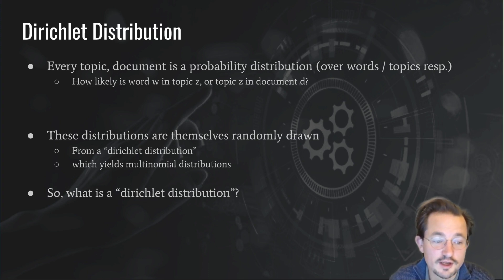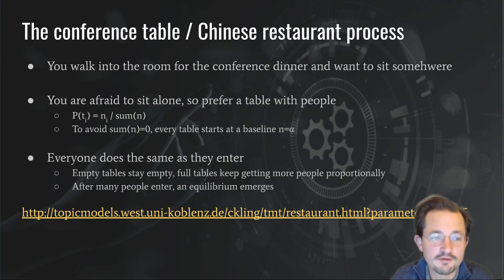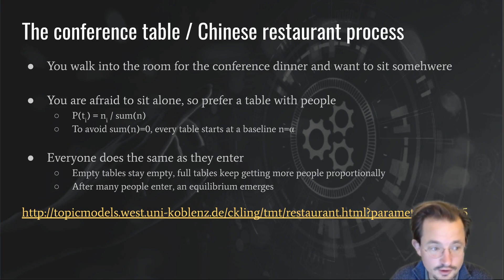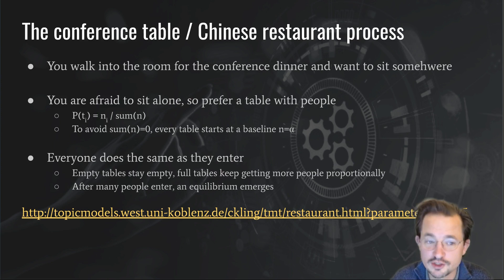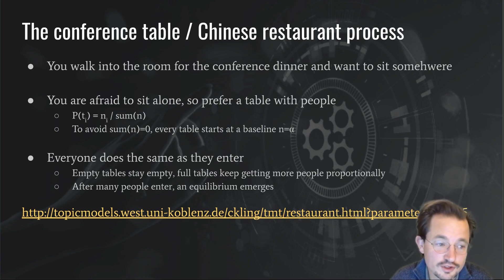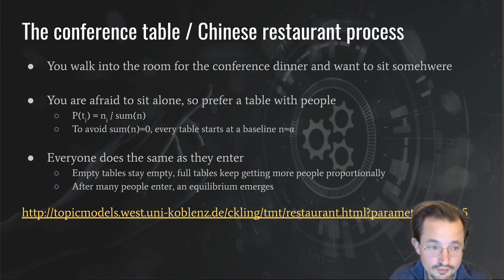So what is this Dirichlet distribution? A metaphor often used to explain it is the Chinese restaurant process, or maybe more suitable for an academic setting, the conference table process. Let's assume we have a world where we can go to conferences again, and you go to a conference where you don't know many people and it's time for the conference dinner. You need to sit down at a table, and of course you're afraid that if you choose an empty table you'll still be sitting there alone by the end of the night.